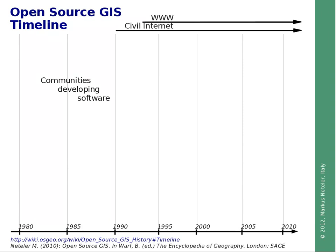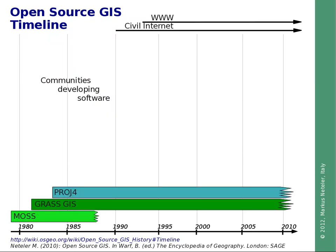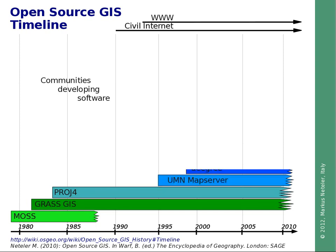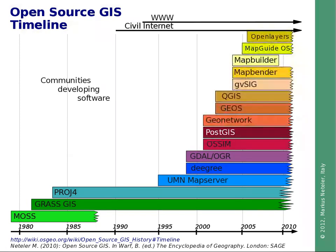Looking at the timeline, we start in the early 1980s with two or three systems: MOS, GRASS GIS, and the Proj.4 library for reprojection, which is used in different software projects even today. Two of those survived and are continuously developed. Then, with the advent of civil Internet and the availability of the WWW and collaborative software development tools, starting from 1995 a series of new projects were established. Virtual communities were established and those led to these new software projects.